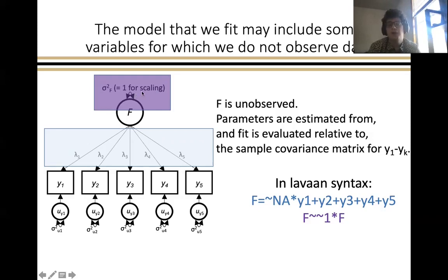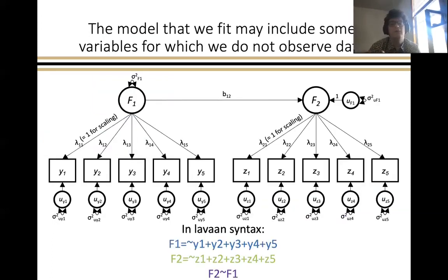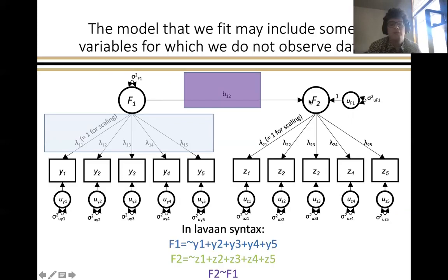Now here, we're just showing what if you want to expand this out to include the relationships between two latent factors. And so again, in Lavaan syntax, you would write for the latent factor F1 here, this part of the model here in blue, F1 equals tilde Y1 through Y5. For the regression relationship between F2 and F1, this part here in purple. And for the latent factor model for factor two, F2 equals tilde Z1 through Z5.